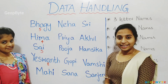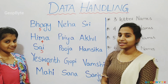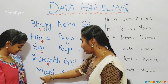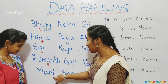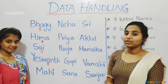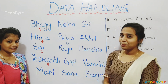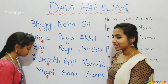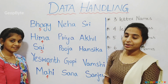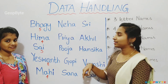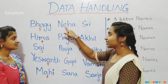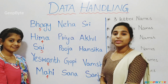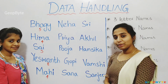Now, let us count how many letters in the name Mahi. One, two, three, four. There are four letters in the name Mahi. Let us count how many letters in the name Neha. One, two, three, four. There are four letters in the name Neha.